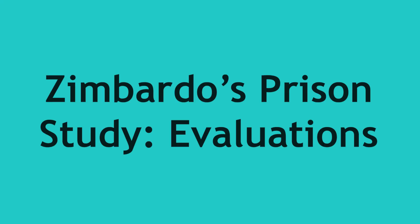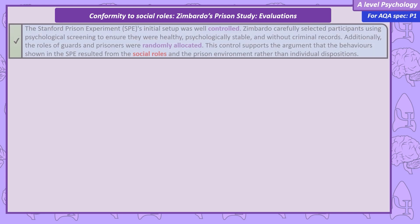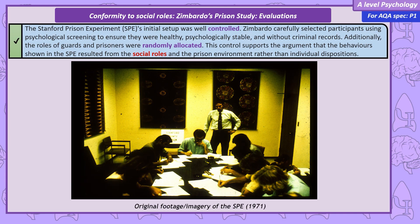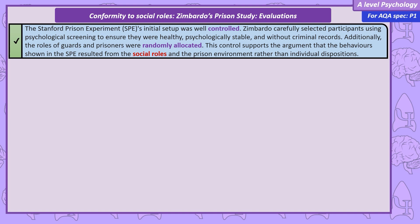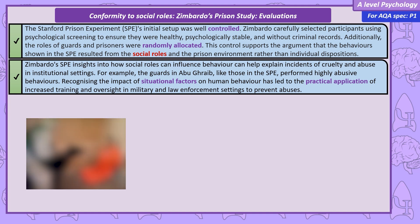Zimbardo's Prison Study — Evaluations. Starting with positive evaluations: we can praise the SPE's methodology in terms of the initial setup. The participants were carefully selected, suggesting none were naturally highly aggressive, and they were randomly assigned to be prisoners or guards. This high level of control reduced the likelihood of participant variables. The findings of the Stanford Prison Experiment have also been practically applied to understand real-life examples of institutional abuse. One famous example is the American military prison of Abu Ghraib.